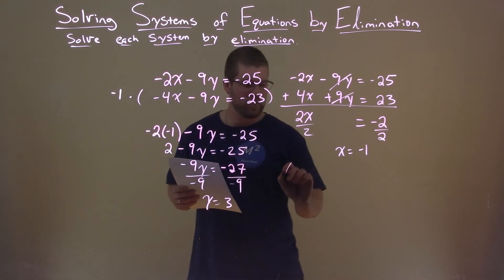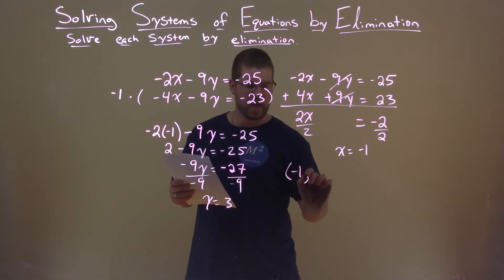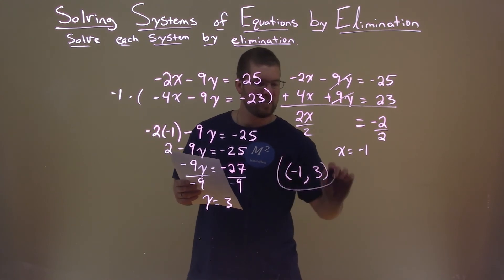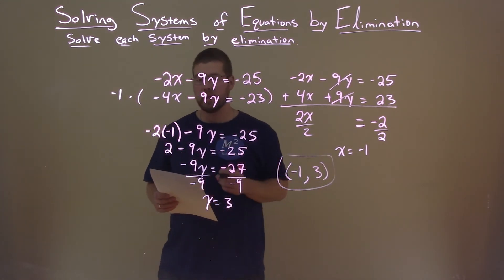So we're left with a coordinate point now: negative 1, comma, positive 3 as our solution when solving this by elimination.